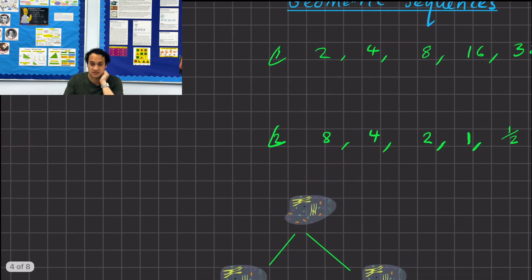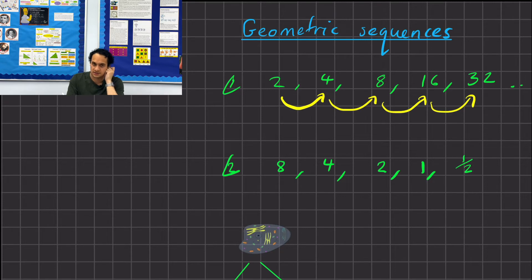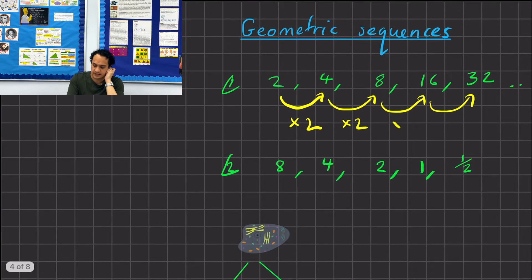Let's move on to geometric sequences. With a geometric sequence, each time we go from term to term, rather than adding a constant difference, we're multiplying by something. So 2 to 4 we're multiplying by 2; 4 to 8, multiplying by 2; 8 to 16, multiplying by 2; and 16 to 32, multiplying by 2.